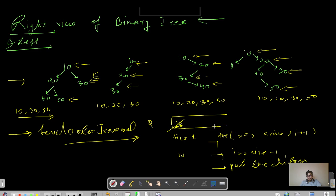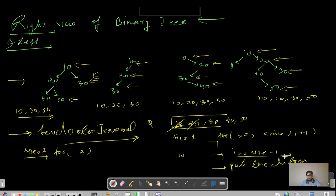Since 10 was popped, its children 20 and 30 are pushed into the queue. The size is now 2, so the for loop runs twice. Node 20 is removed and its children 40 and 50 are pushed. When i equals size minus 1 — the last node of this level — we add that node to our answer. Node 30 is then popped and since it's the last node, it's included. Our current answer is 10 and 30.